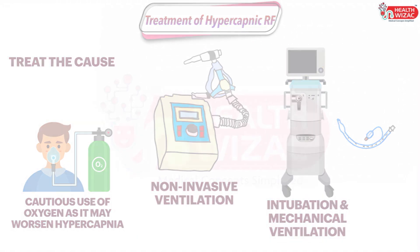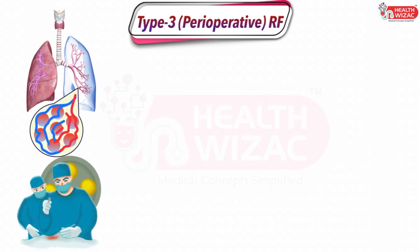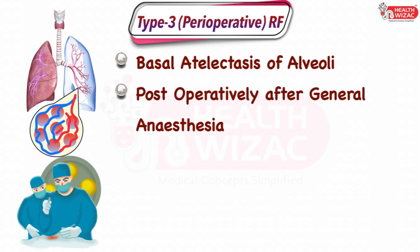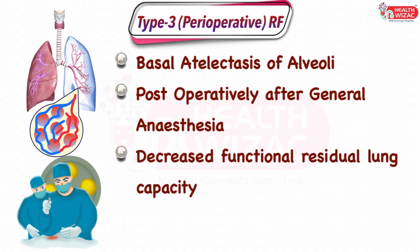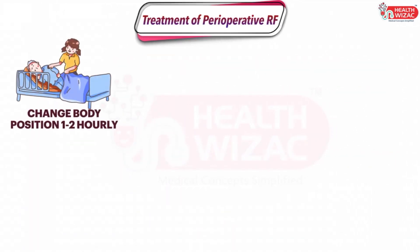Next is Type 3 respiratory failure, or perioperative respiratory failure. It results from basal atelectasis of alveoli, which usually presents in post-operative conditions after general anesthesia. It results from decreased functional residual lung capacity, ultimately leading to collapse of alveoli and causing hypoxia.